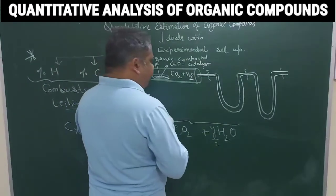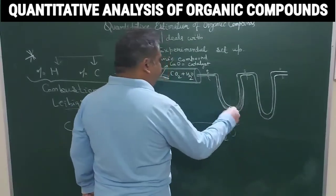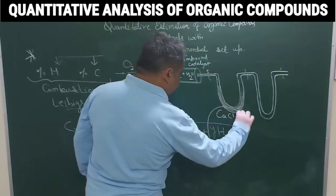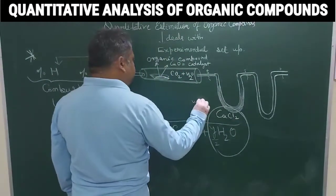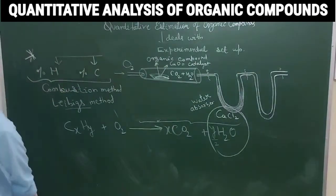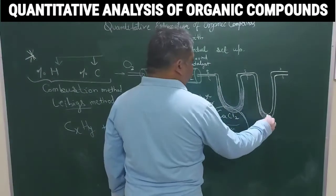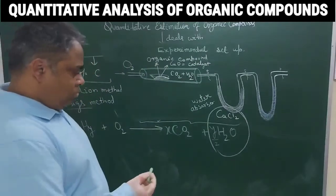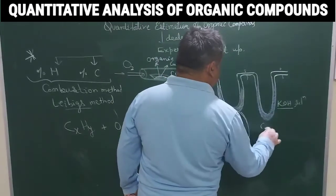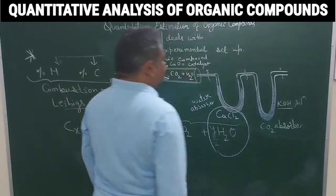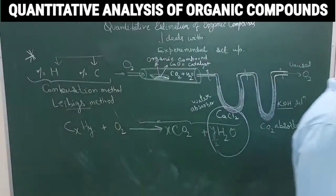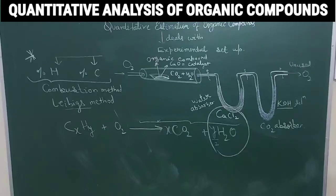In the first U-tube, calcium chloride is filled in, which acts as a water absorber. In the second U-tube, KOH solution is filled in, which acts as a CO₂ absorber. The excess unused oxygen comes out from the other end, so we keep that end open; otherwise there will be pressure buildup and backflow of gases.